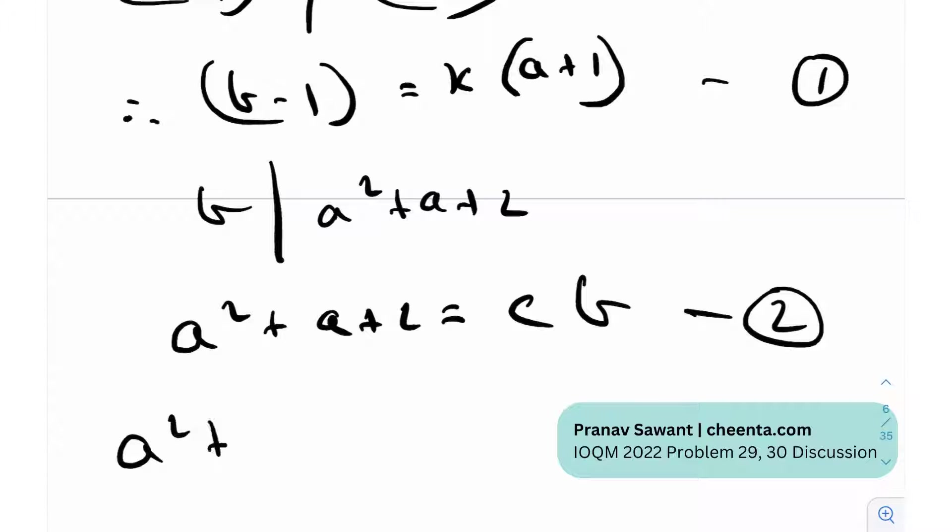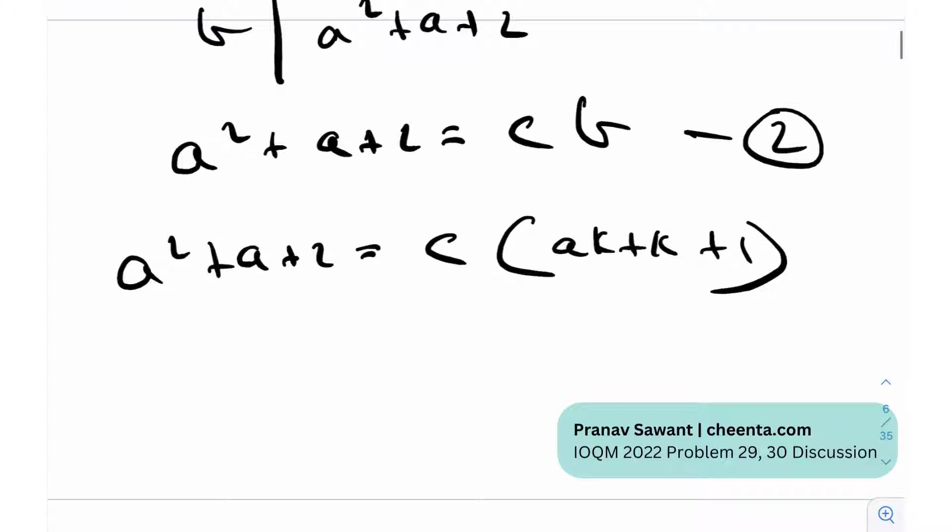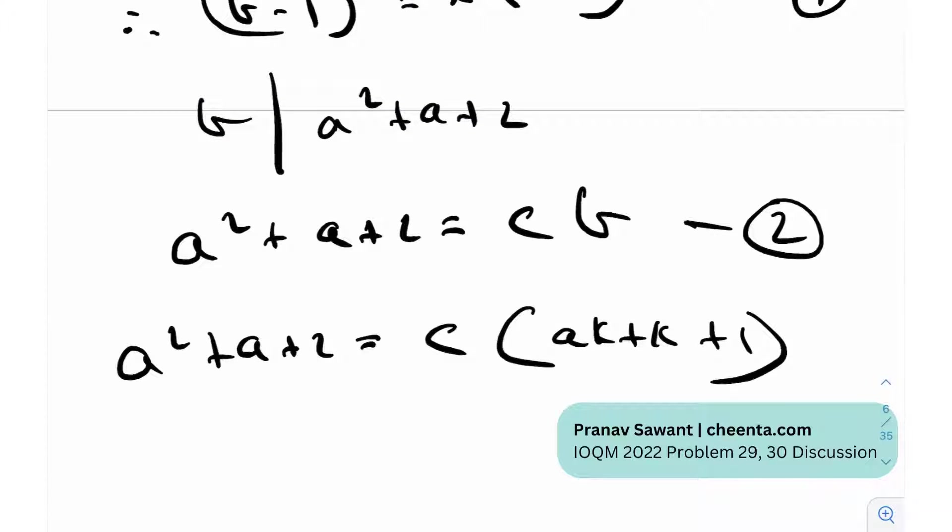So a² + a + 2 is equal to C times, I'll take the value of b from the first equation and plug it in, so that will be nothing but AK + K + 1. If I just try to simplify that, I will get a² + a + 2 is equal to ACK + CK + C. I'll get A times (A+1) + 2 is equal to, if I take CK as common, I'll get (A+1) + C.